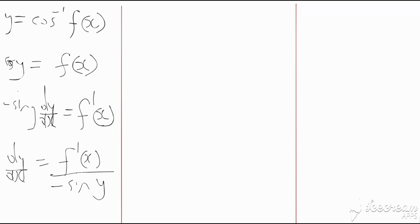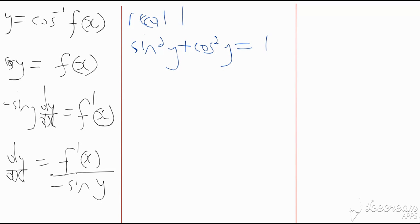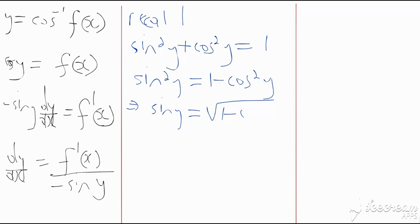We don't want sin(y) in the answer — we want a function of x since the original function was explicit. We know sin(y) is connected to cos(y), and cos(y) = f(x). Recalling that sin²(y) + cos²(y) = 1, we get sin²(y) = 1 − cos²(y), so sin(y) = √(1 − cos²(y)).